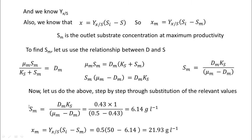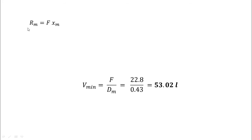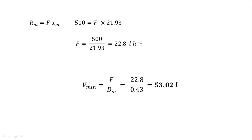From Sm, we calculate Xm: Xm = Yx/s × (Si − Sm) = 0.5 × (50 − 6.14) = 21.93 g/L. Then, since Rm = F × Xm: 500 = F × 21.93, so F = 500 / 21.93 = 22.8 liters per hour.